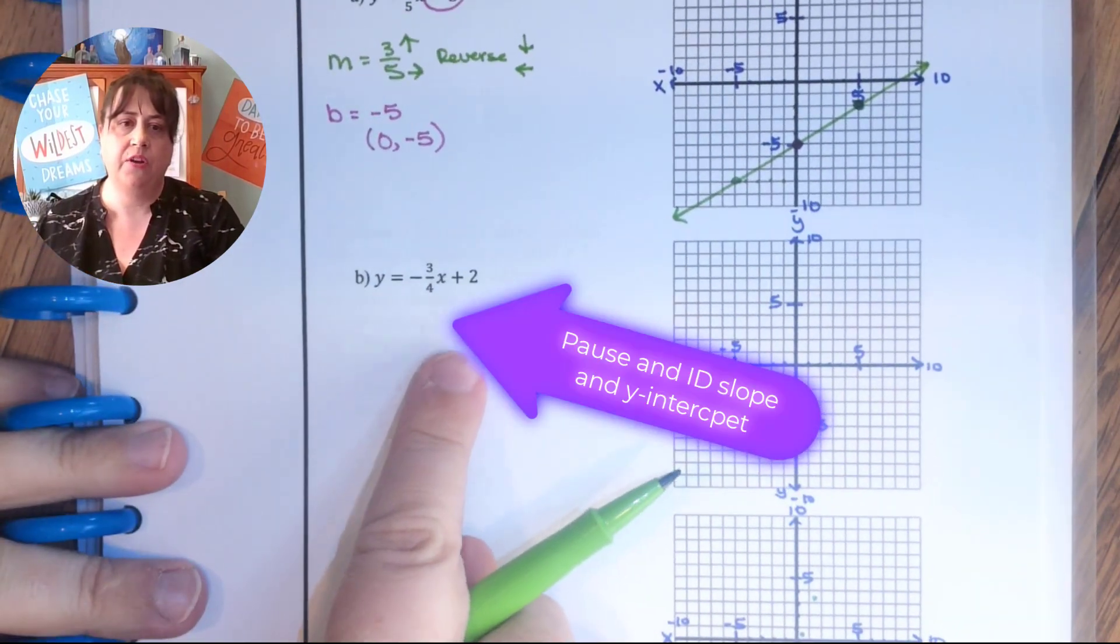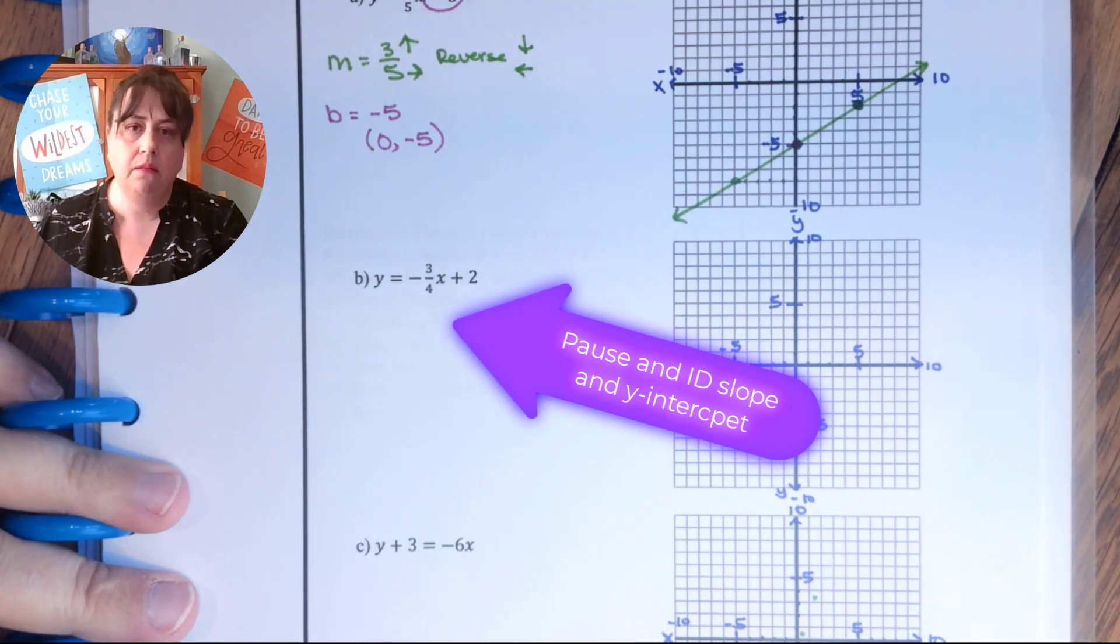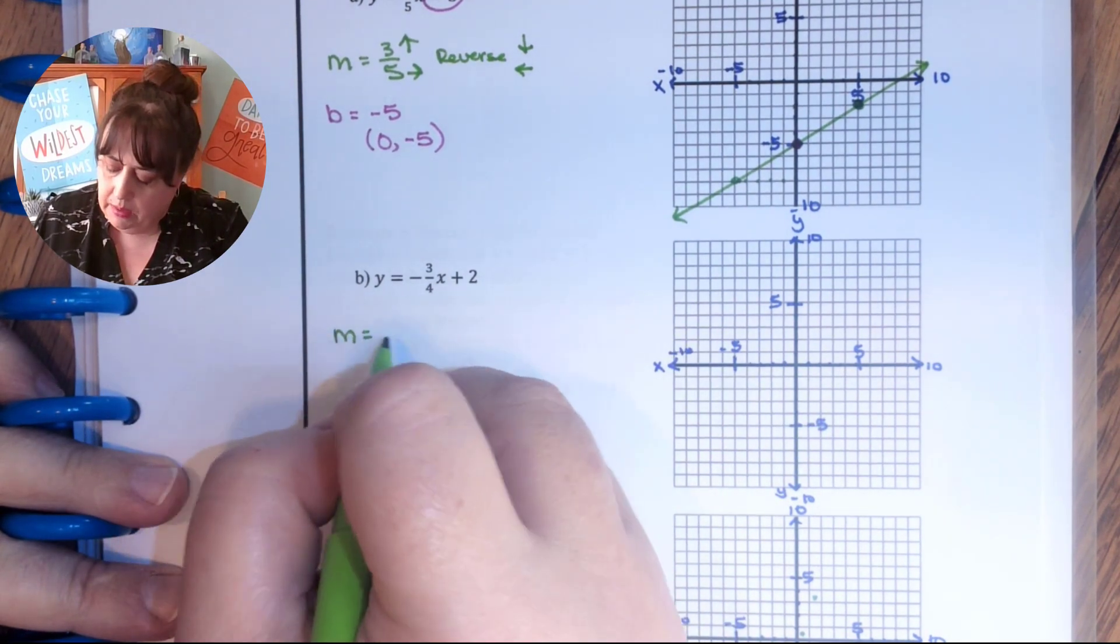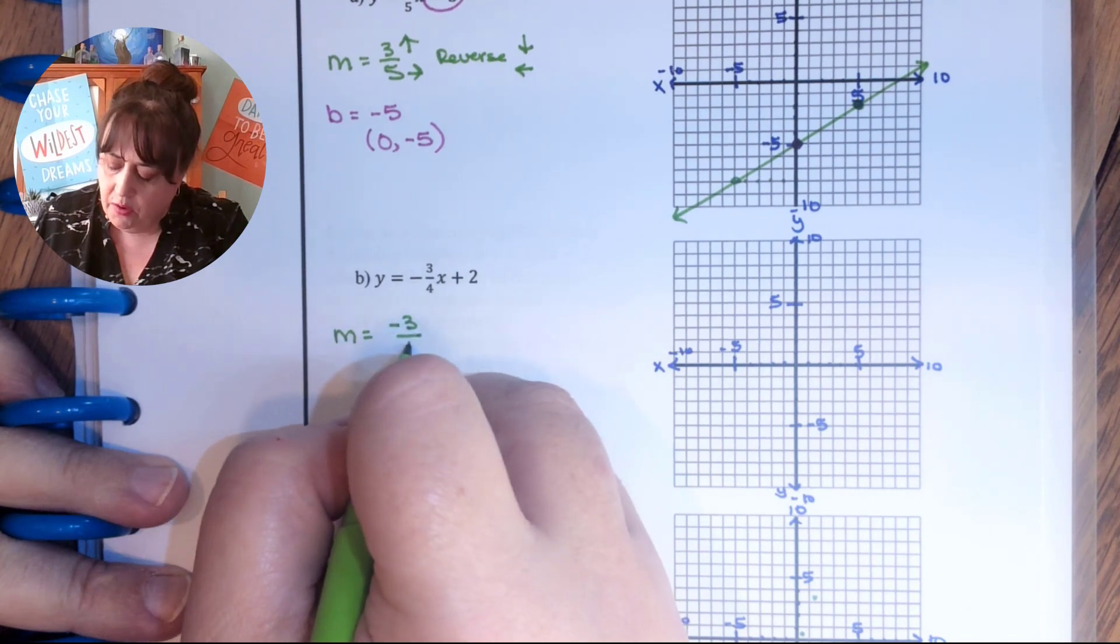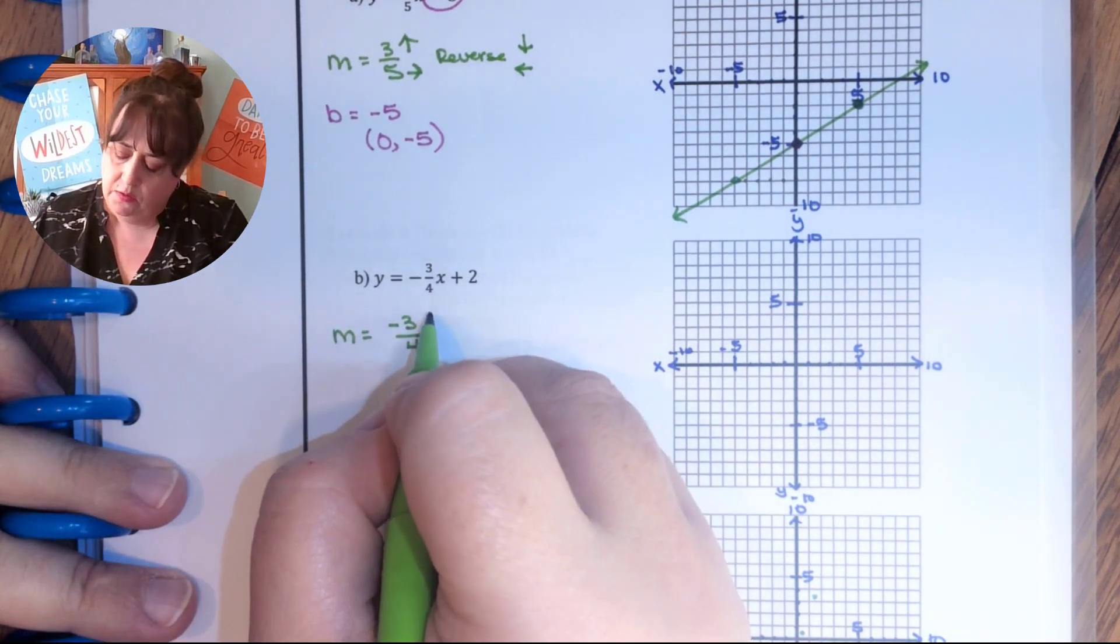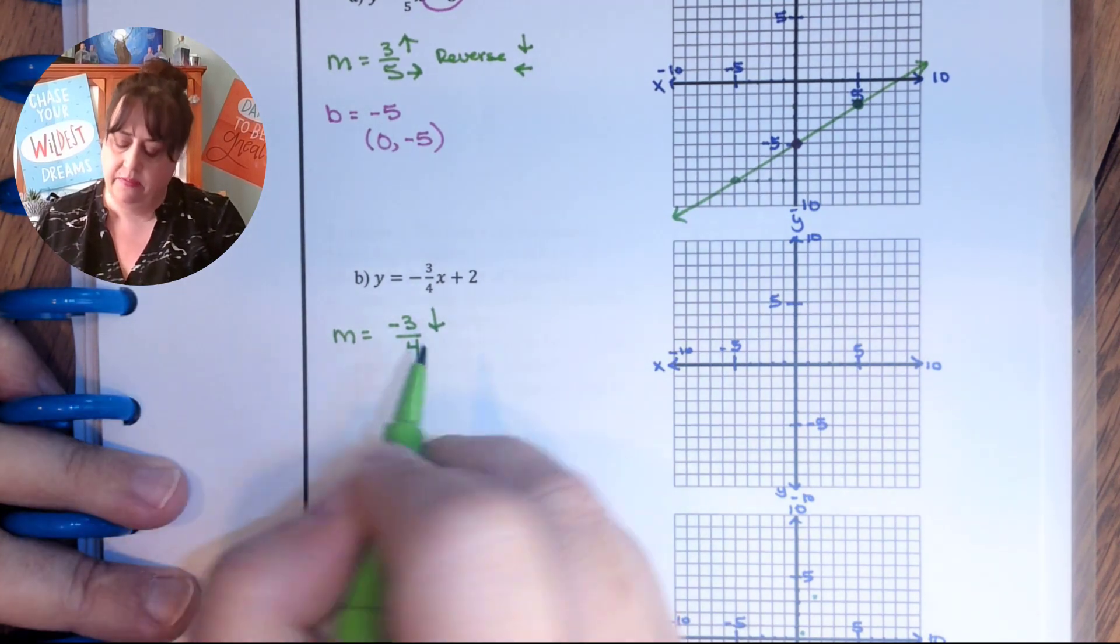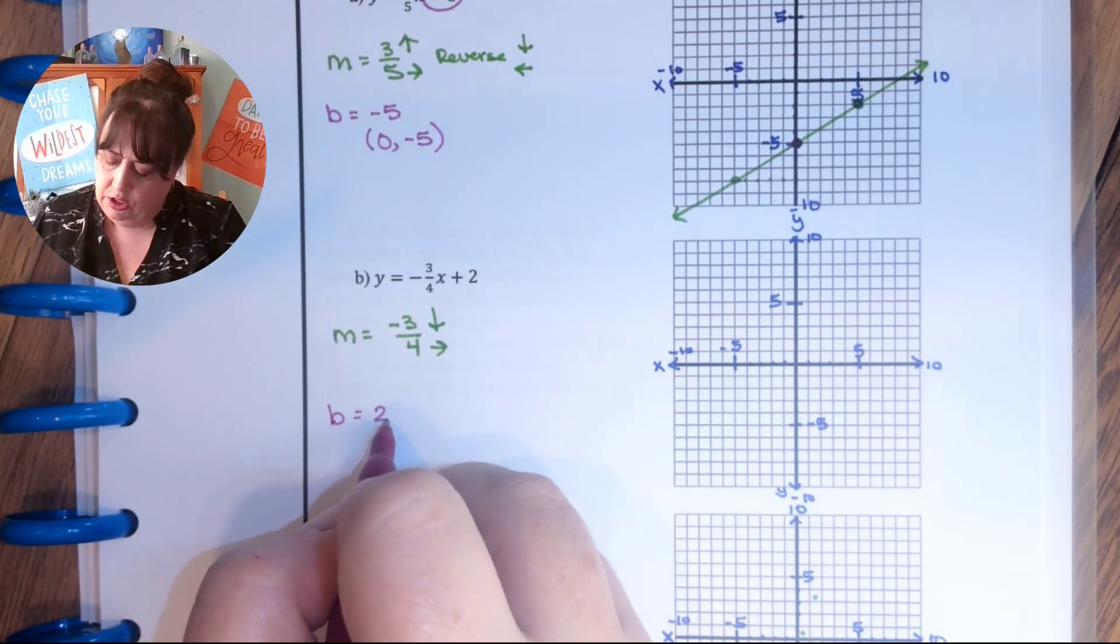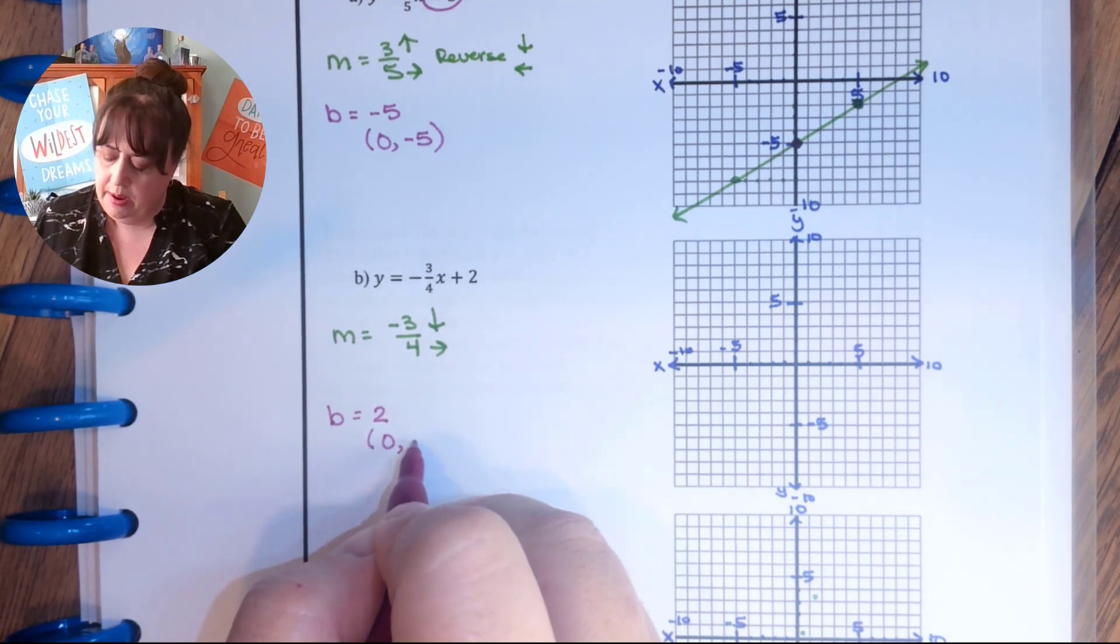Okay. This one. Identify your m and your b. Then come on back. Okay. So m is negative 3 over 4. The negatives always go up to the top. So it's going to be down because it's negative and it's always to the right. And b is going to be 2. So it's always 0 and then the number.